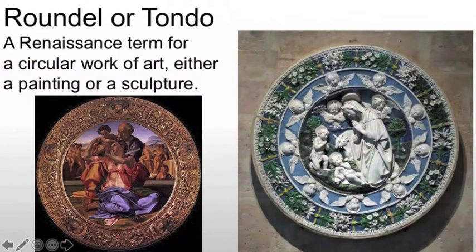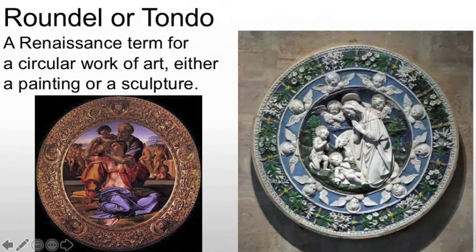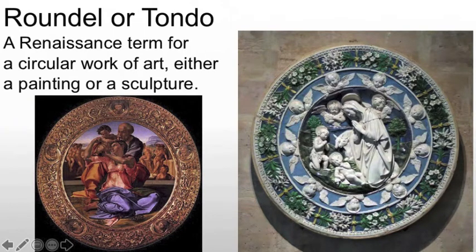We will also see the use of a roundel or a tondo, depending on what you're dealing with. This is simply a circular work of art. It could be a painting, like on the left, which is a tondo by Michelangelo of the Holy Family. Or you could see something more sculptural, like on the right — the sort of thing that will be mounted into a wall. It's generally going to be terracotta or some other ceramic form, with glazes in white and blue and then floral around the outside. These are very, very common. You're going to see them a lot. Or San Michele, a major church in Florence, is full of them.